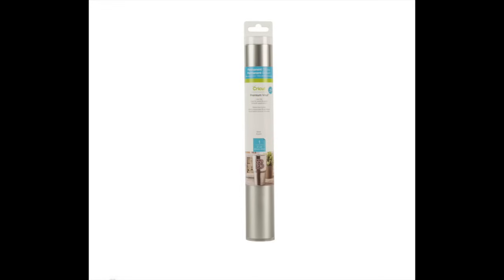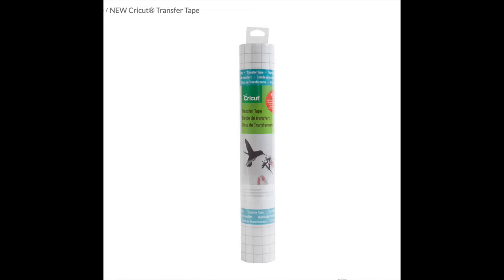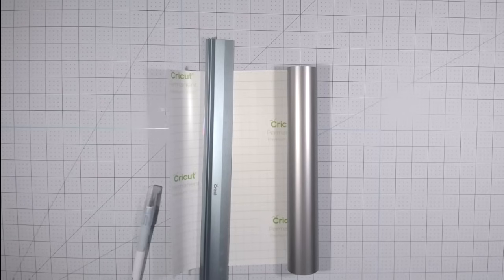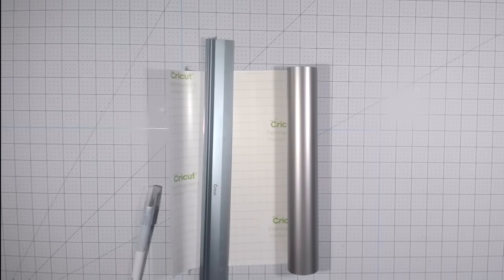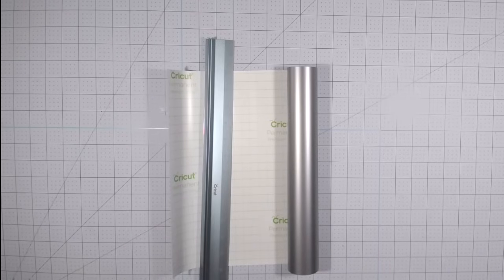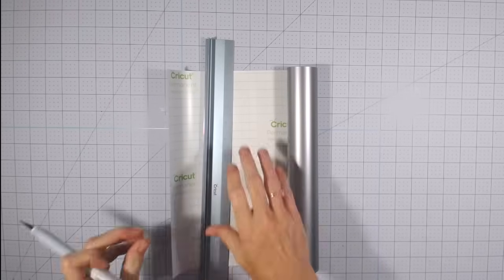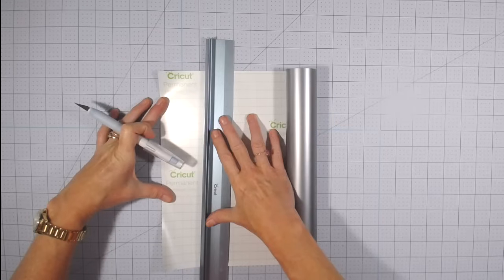I am using the new Cricut Permanent Vinyl and I'm also using the Cricut Transfer Tape which is also new. Next I'm going to cut a piece of vinyl using the new Cricut Ruler on the self-healing mat and along with my TrueControl Nightblade. This is my favorite way to cut the vinyl.